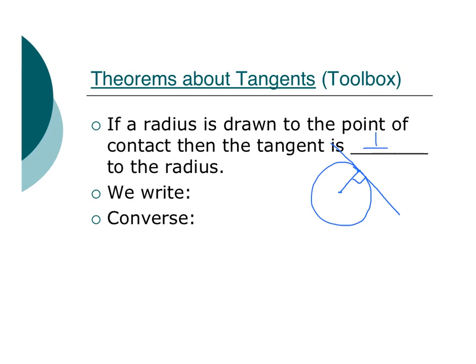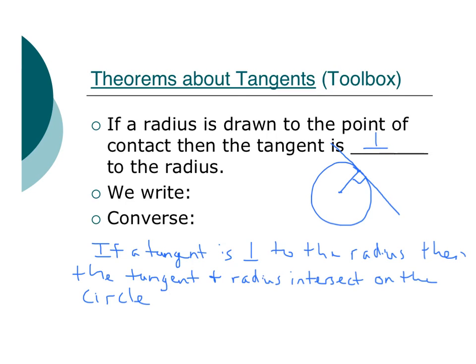Very important. We know that we can use perpendicularity all the time in our proofs. Now, let's write the converse. Our converse would be if a tangent is perpendicular to the radius, then the tangent and radius intersect on the circle. So we know that they intersect right there on the circle.